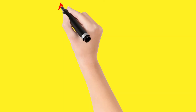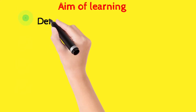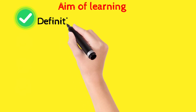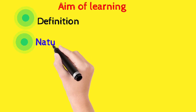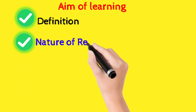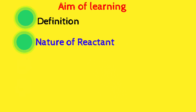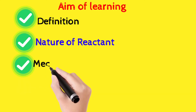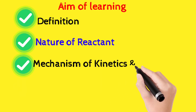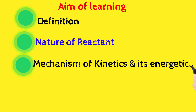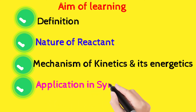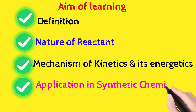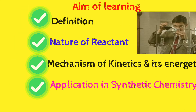Our entire learning process will be summarized into several parts: first, the definition of an organic compound, which is a very vital part. Then, how a reaction happens can be known from the nature of the reactant — why all reactants never respond in the same kinds of reactions. This can be systematically understood through a detailed study of mechanism, kinetics, energetics, and utility in organic synthesis, specifically retrosynthesis strategies.